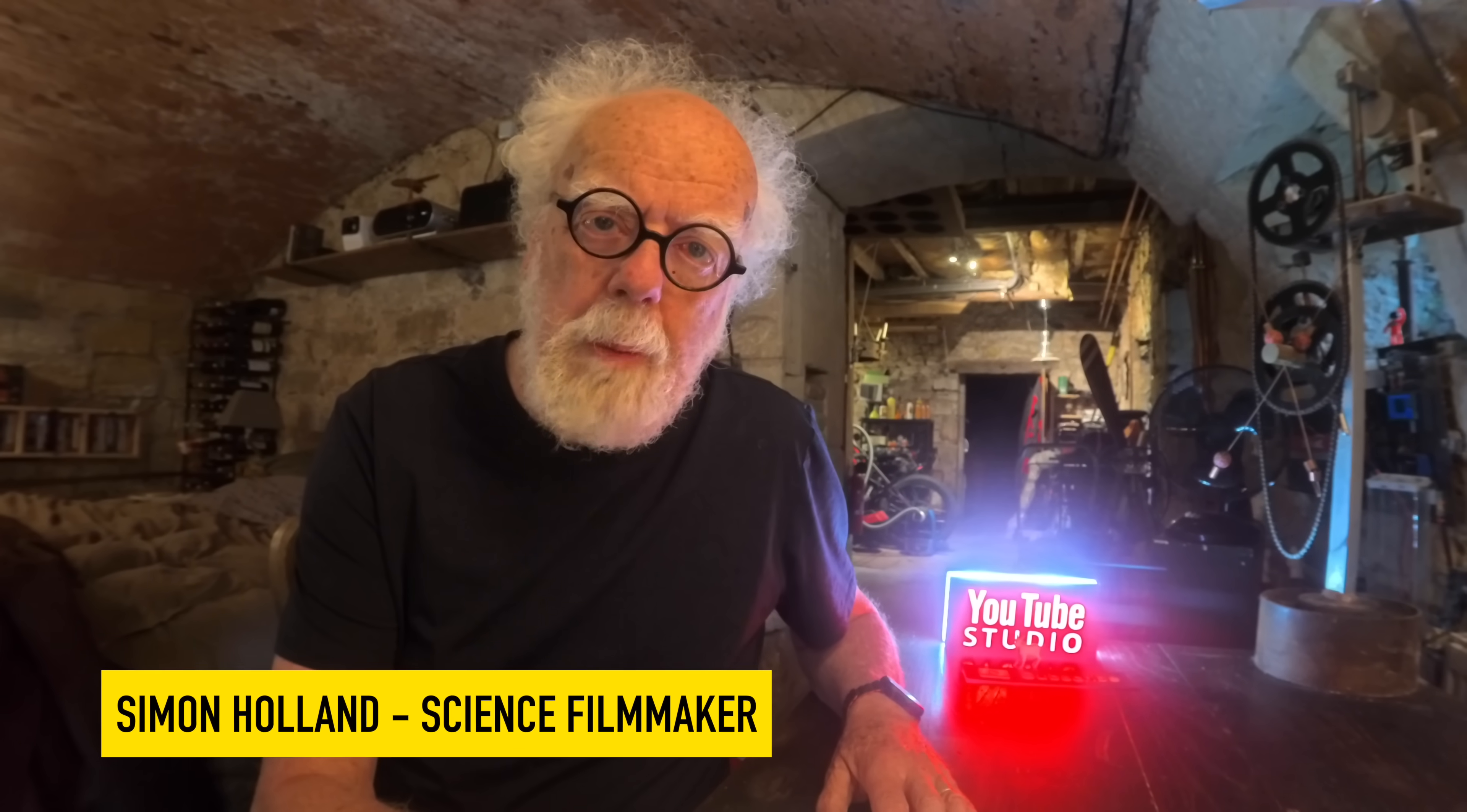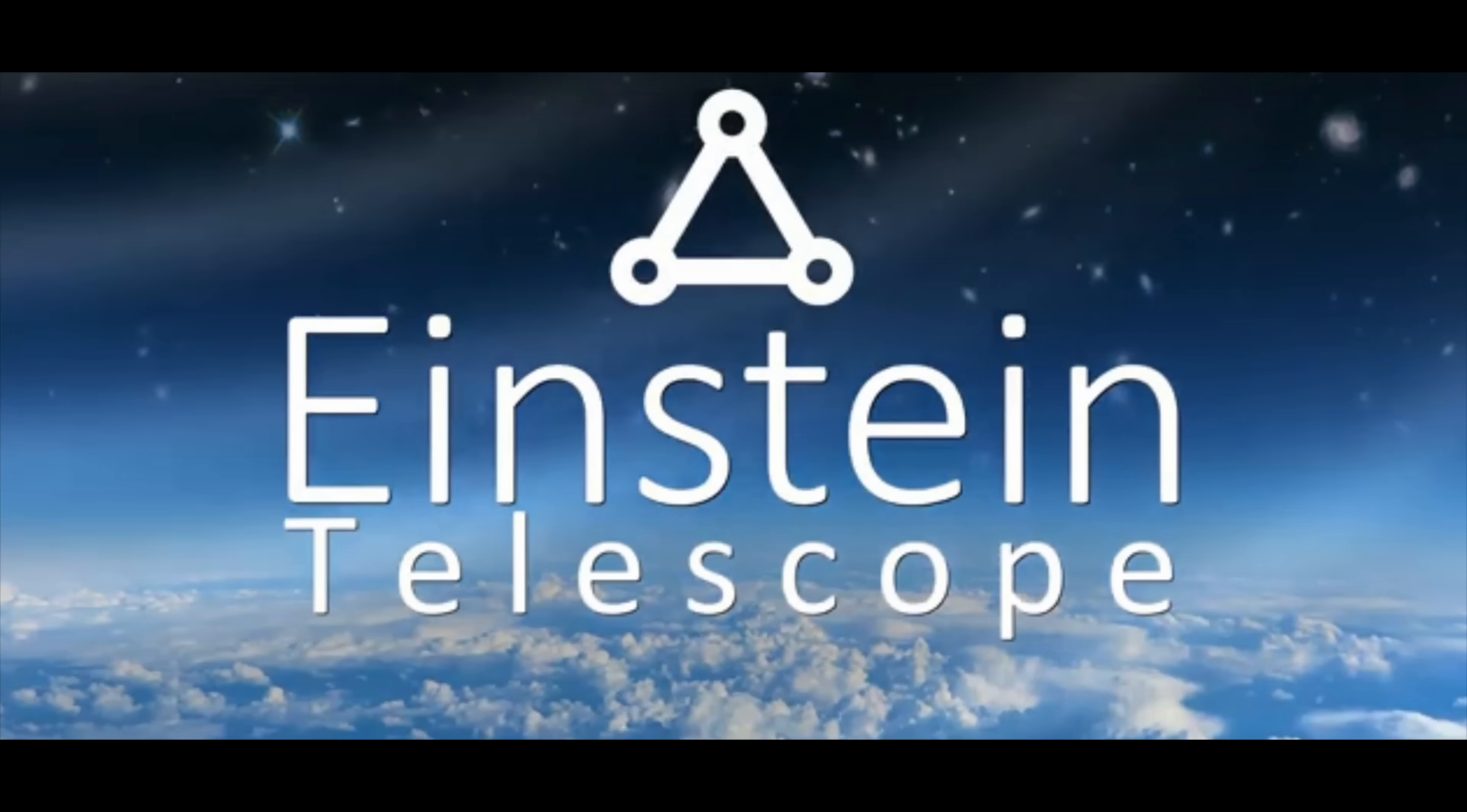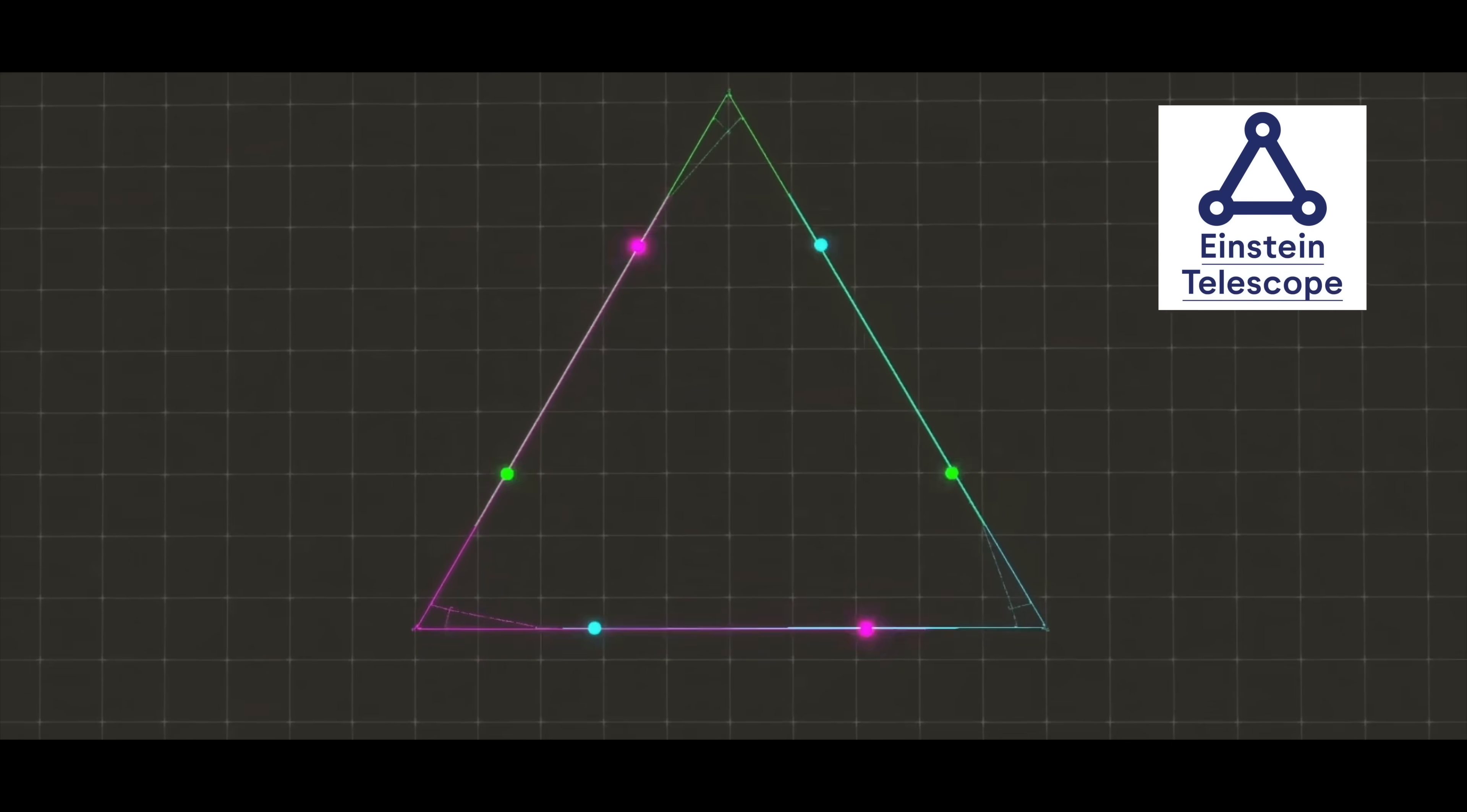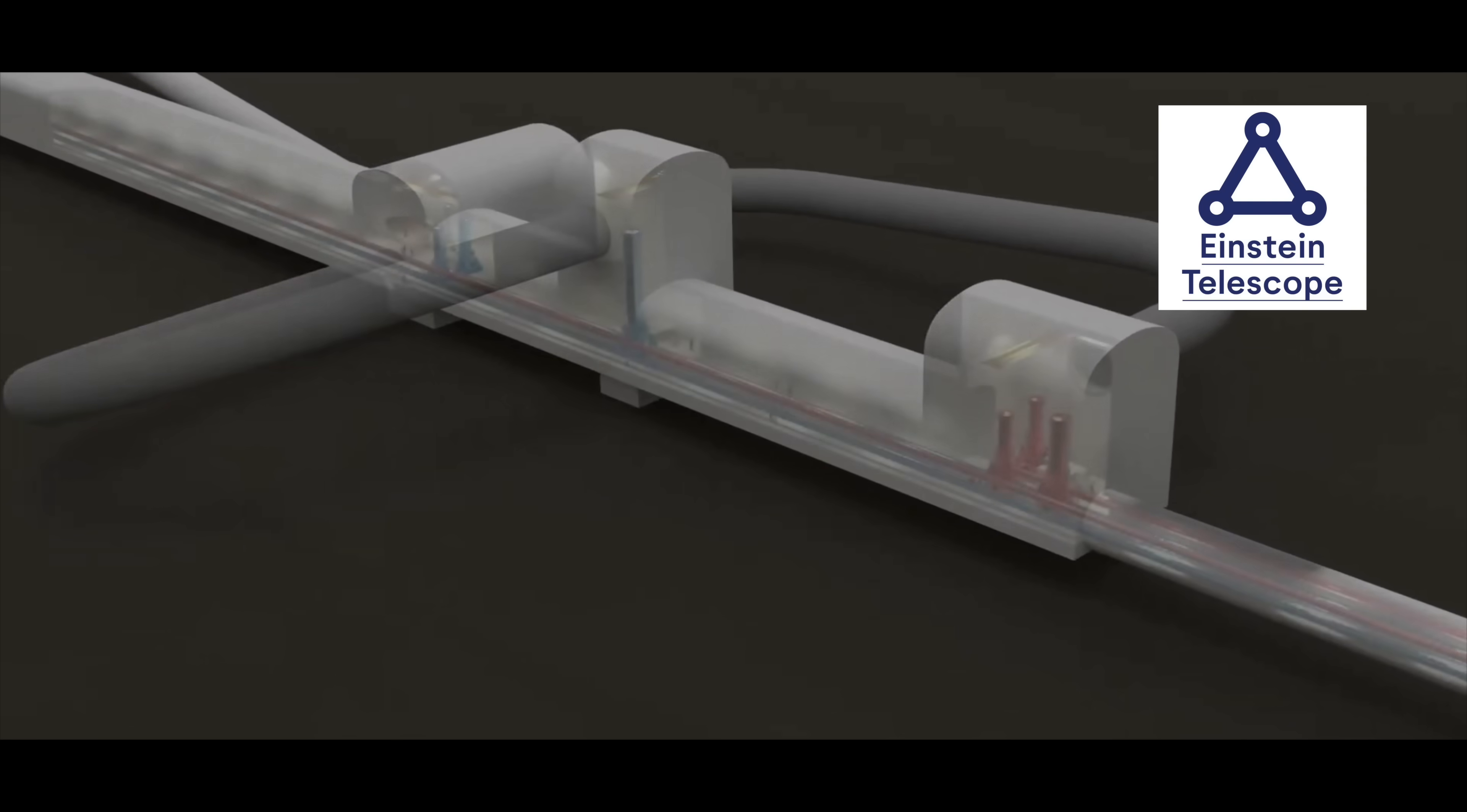Hey people, is Europe building the world's biggest UAP detector? Well, below Belgium, Holland and Germany, this new Einstein telescope will be the most sensitive gravity anomaly detector on our planet.